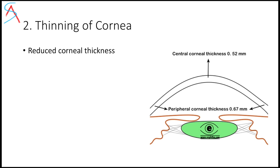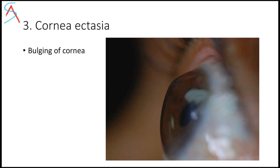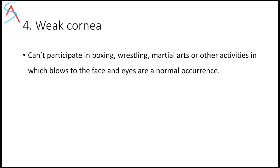In all LASIK surgeries they reduce the cornea thickness, and when your cornea is thin it can result in corneal ectasia, meaning the cornea may bulge out — we call this a weak cornea. If the cornea is weak, you cannot participate in boxing, wrestling, martial arts, or similar activities. In some jobs, people are considered unfit if they have undergone a refractive surgery.